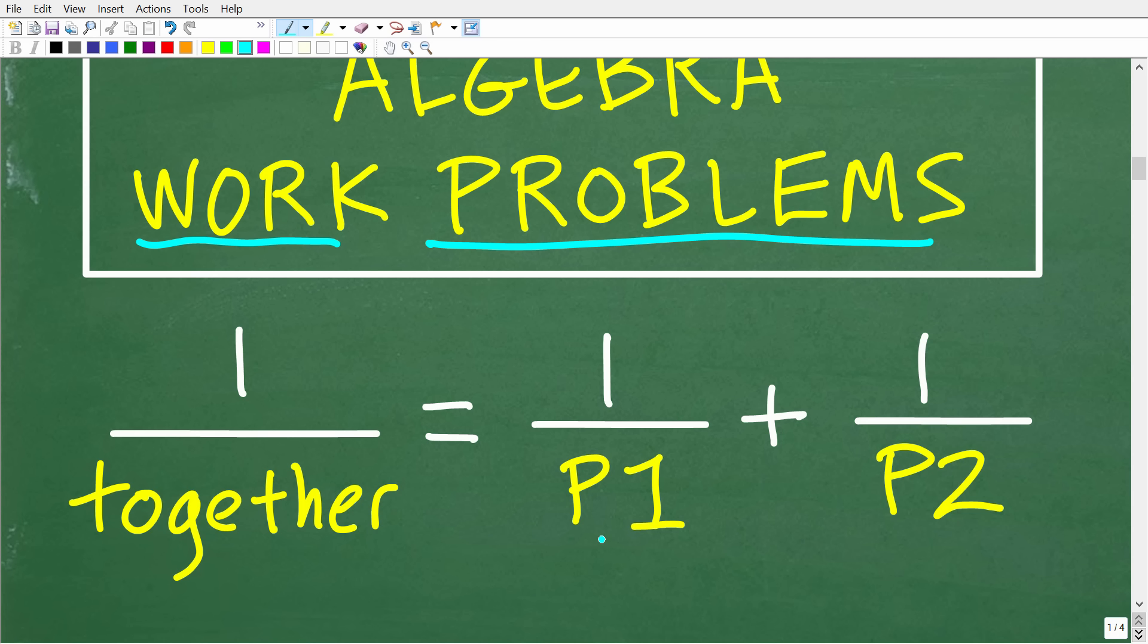So, we can have like machine A can do this job in this amount of time and machine B can do the same job in this amount of time. And we can have more than just two people or more than just two machines. So, this formula can continue on in this same format. So, one over the time it will take together, the combined time of all people or all machines working together will be equal to one over P1 plus one over P2.